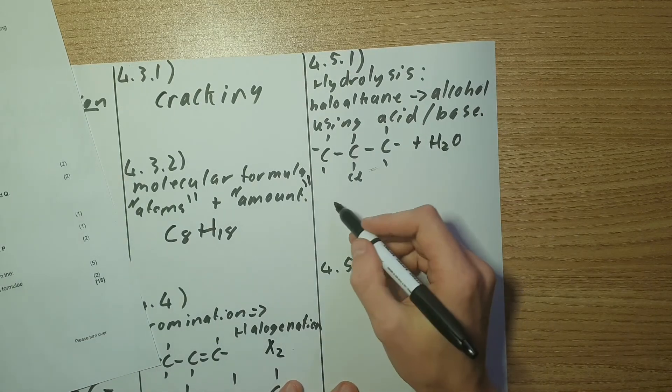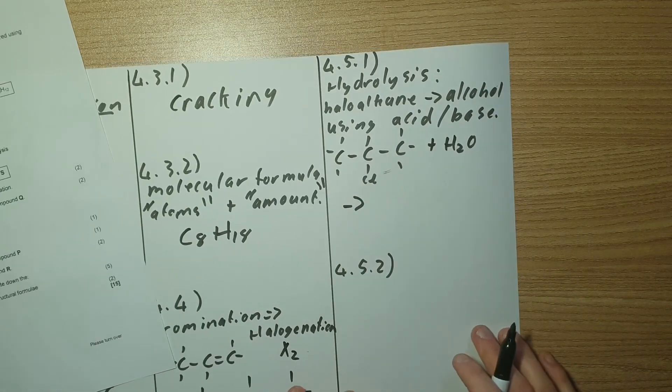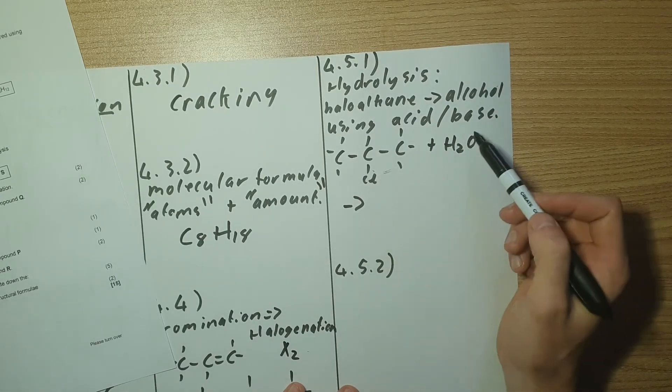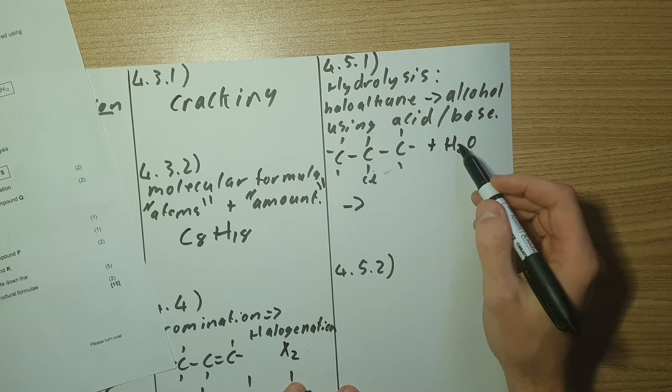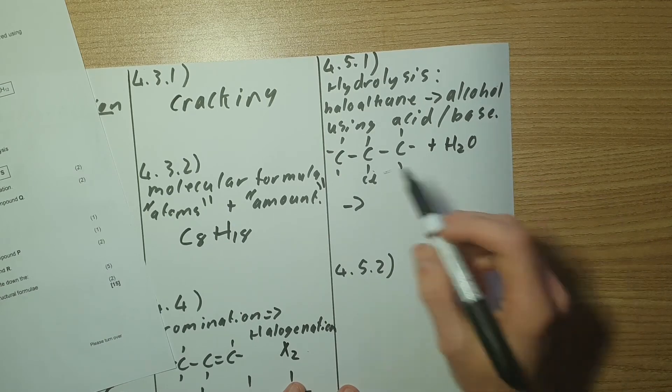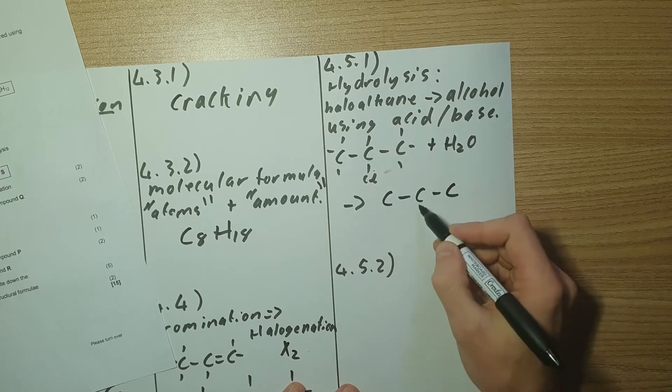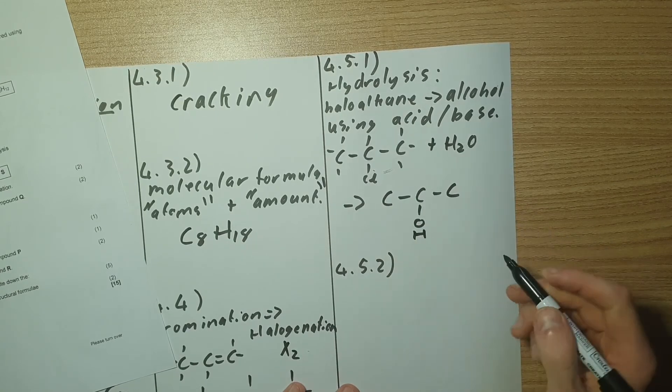So adding water to that I am now going to get, so the Cl is going to come out, it's going to attach to one of the hydrogens and the OH from the water is now going to take its place. So we're going to have one, two, three, we'll have our alcohol forming here.